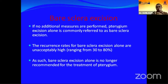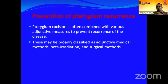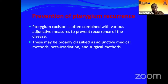If no additional measures are performed after pterygium excision, it is called bare sclera excision. This was practiced in the past but has a high recurrence rate ranging from 30 to 90%. Bare sclera excision alone is no longer recommended. Pterygium excision is now combined with various adjunctive measures to prevent recurrence, including medical methods such as mitomycin C, beta irradiation, or various surgical methods.